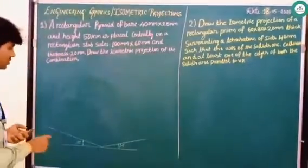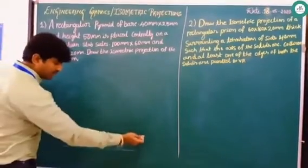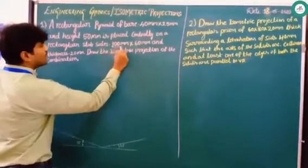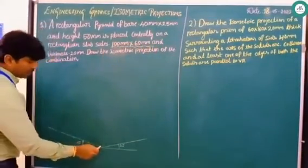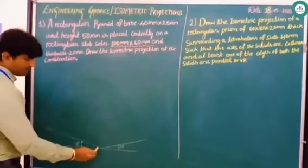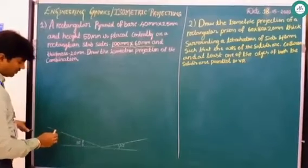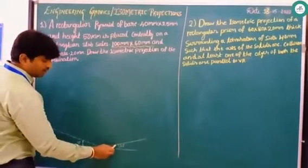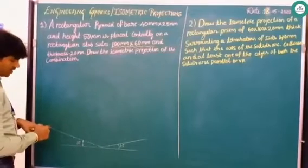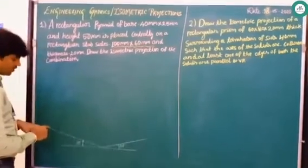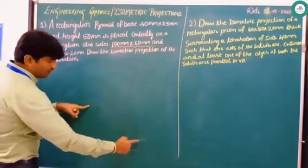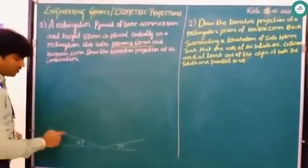To begin with, as usual, draw one horizontal line and trace 30-degree lines to both sides. The rectangular slab has dimensions 100 × 60mm. Take 100 to this side — marking 10, 20, 30, 40, 50, 60, 70, 80, 90, 100 — and to the right side 10, 20, 30, 40, 50, 60. From the corner points, count 60 to this side, giving the base parallelogram of the slab.